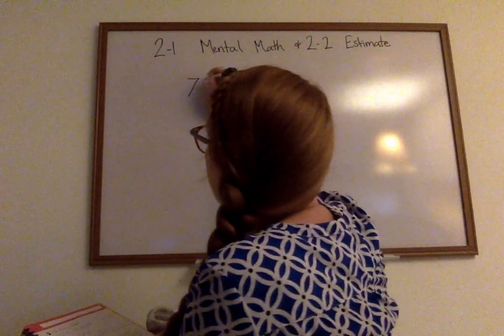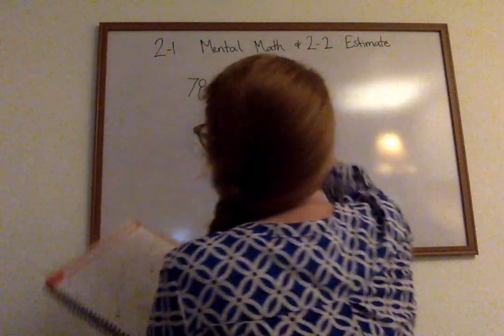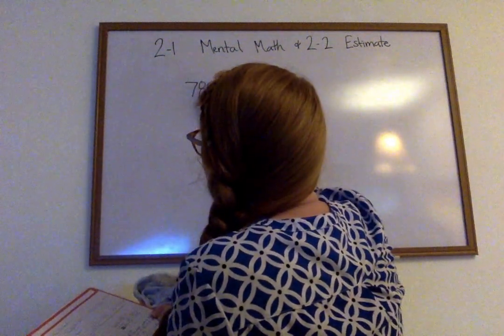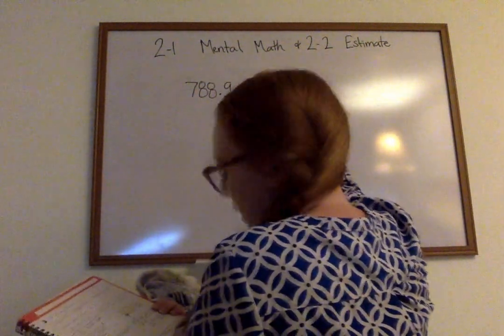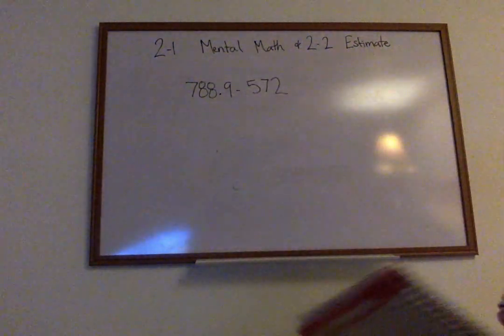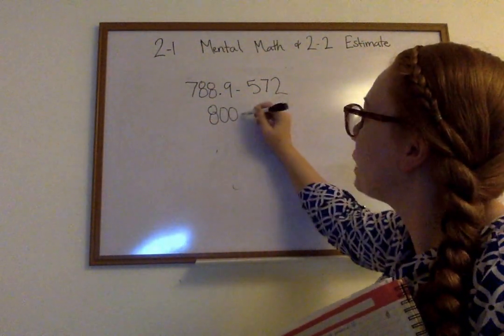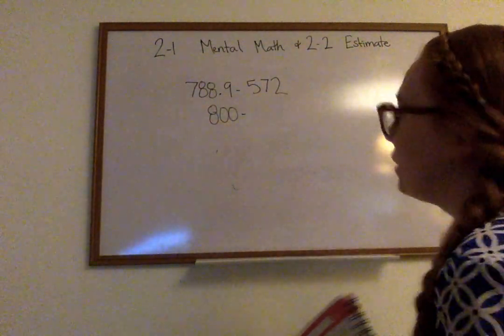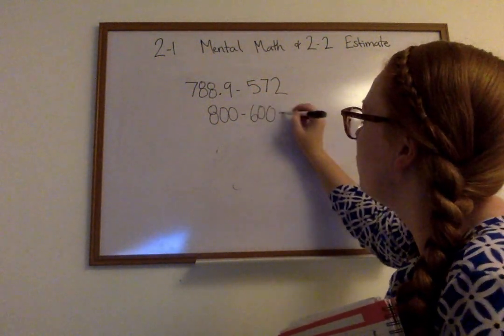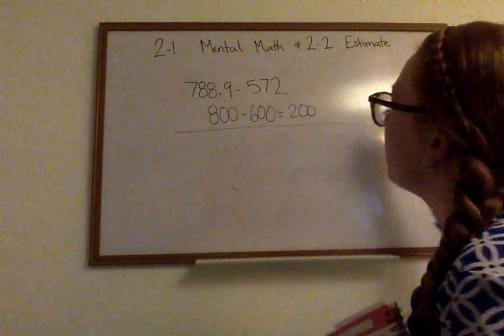If I have 788.9 minus 572. So again, I'm going to round. My 788 rounds nicely to 800. Bring down my subtraction sign. 572 will round up to 600. Minus these two, I would get 200. All rough estimates.